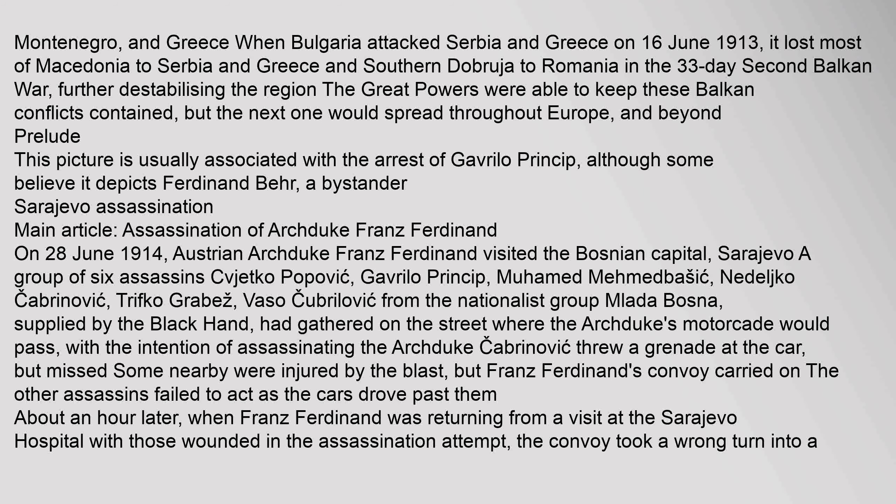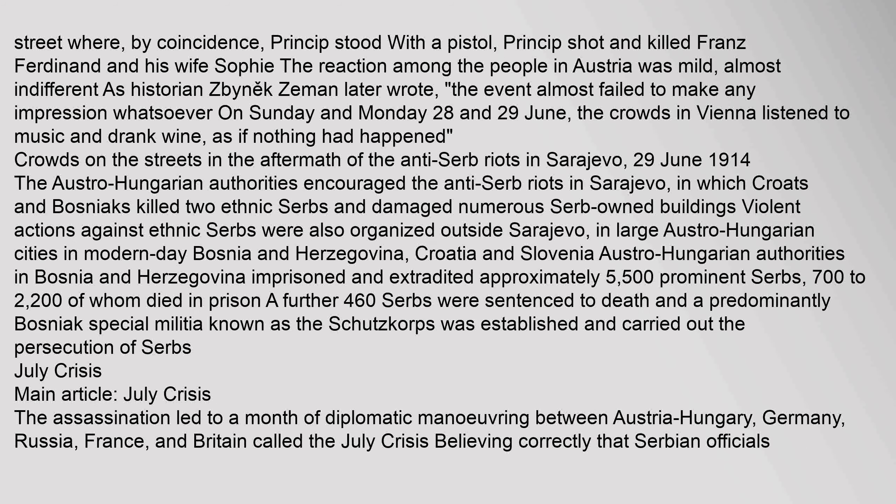On 28 June 1914, Austrian Archduke Franz Ferdinand visited the Bosnian capital, Sarajevo. A group of six assassins — Cetko Popovic, Gavrilo Princip, Mohamed Mamedbasic, Nedelko Kabrinovic, Trifko Grabas, and Vazo Kubrilovic — from the nationalist group Malata Bosna, supplied by the Black Hand, had gathered on the street where the Archduke's motorcade would pass, with the intention of assassinating him. Kabrinovic threw a grenade at the car but missed; some nearby were injured by the blast, but Franz Ferdinand's convoy carried on. The other assassins failed to act as the cars drove past. About an hour later, when Franz Ferdinand was returning from a visit at the Sarajevo hospital, the convoy took a wrong turn into a street where, by coincidence, Princip stood with a pistol. Princip shot and killed Franz Ferdinand and his wife Sophie.